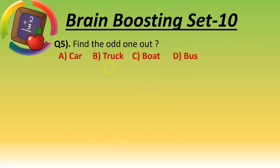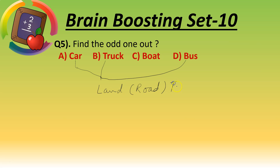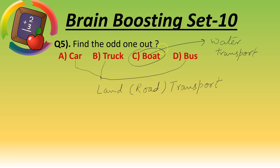Question number five: find the odd one out. Option A is car, B is truck, C is boat, and D is bus. Car, truck, and bus are land transport — they travel on roads. Boat is water transport. So option C, boat, is the odd one out.